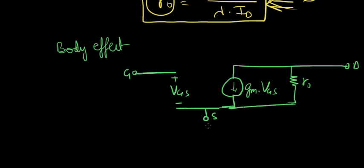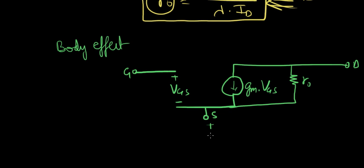Now we have to take into consideration the body effect. What happens in the body effect? There is a voltage difference between the source and the bulk. Say this is the bulk. So we can call it VBS or VSB. So that's all body effect is. I mean that there is a voltage difference between the source and the bulk.